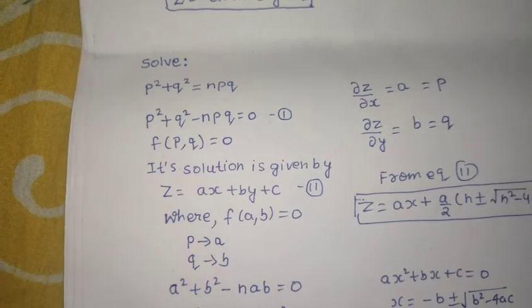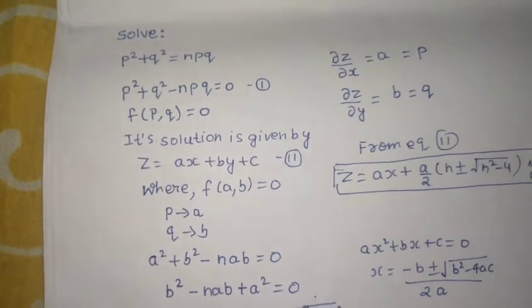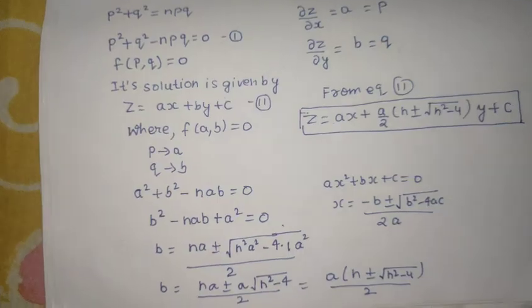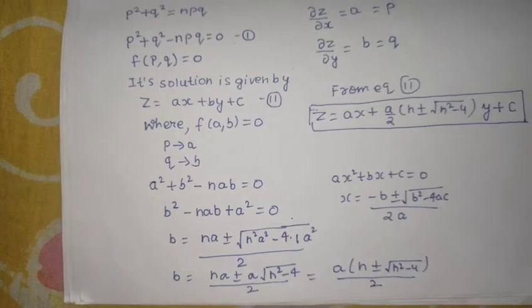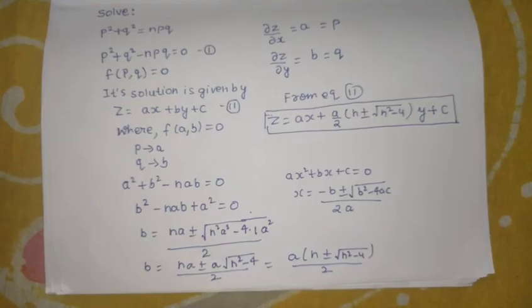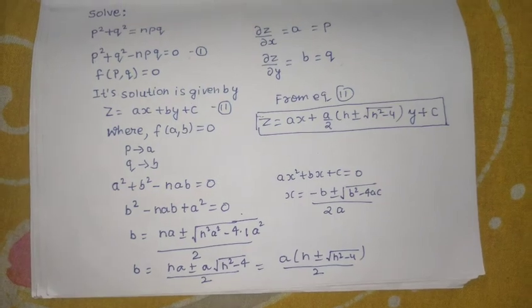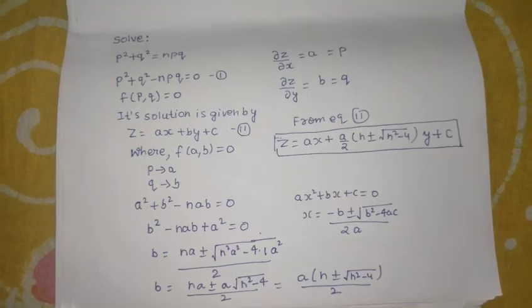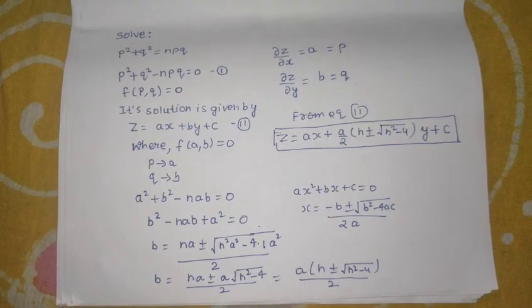The type was that of function of P comma Q equals to 0. So, we know how its solution looks like: Z equals to AX plus BY plus C. Then, the situation was that we want to write either A in terms of B or B in terms of A. So, I chose to write B in terms of A. For that, I made a quadratic in B so that I can find B in terms of A. I solved the quadratic, found the value of B in terms of A, then finally put that in equation number 2 to get my final answer. I hope you understood something from this video. Thanks and have a nice day.